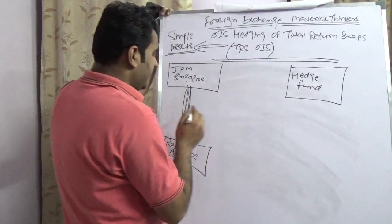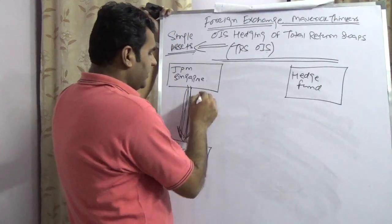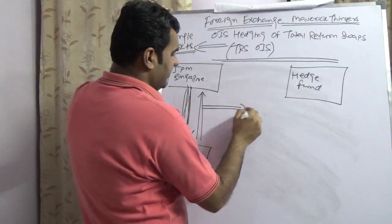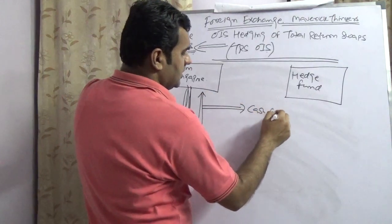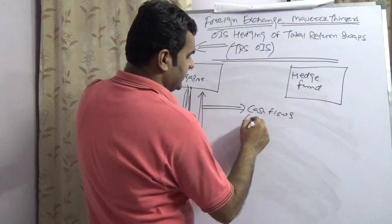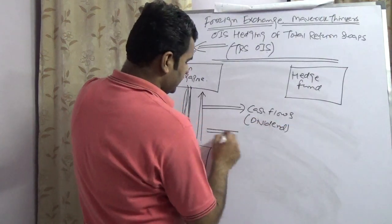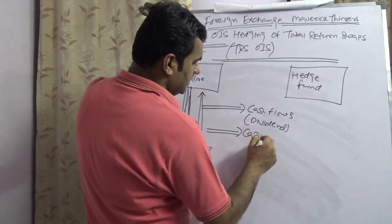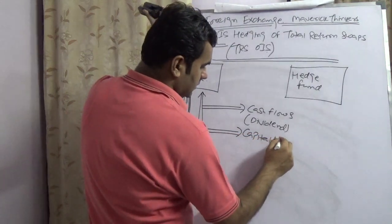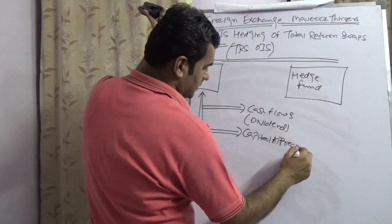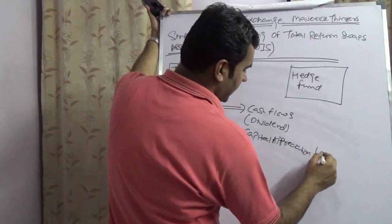And this asset would give two kinds of flows. One is known as cash flows, I would refer to as dividend, and another refers to as capital appreciation and capital depreciation.